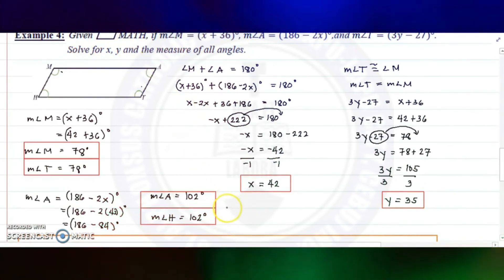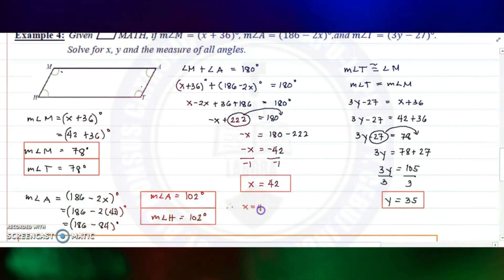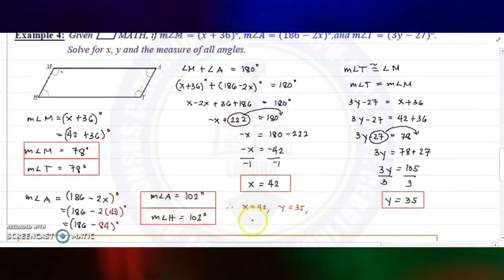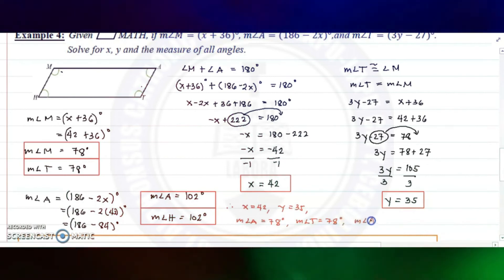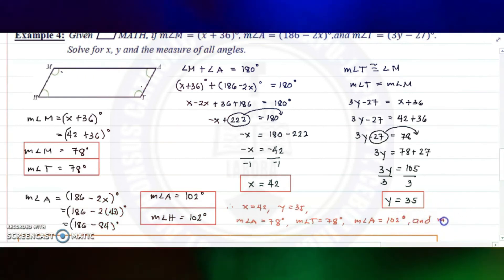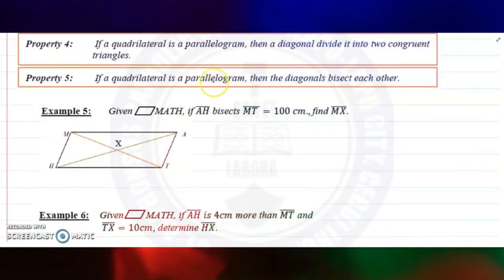Therefore: x equals 42, y equals 35, the measure of angle M is 78 degrees, the measure of angle T is 78 degrees, the measure of angle A is 102 degrees, and the measure of angle H is 102 degrees.